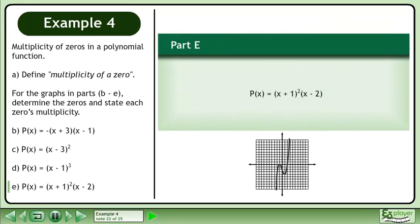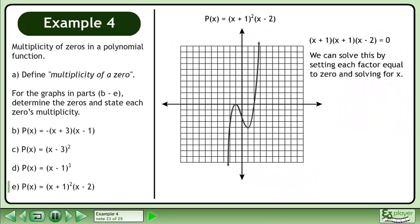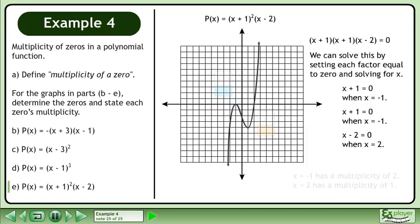In part D, we have the graph of p(x) = (x + 1) squared times (x - 2). (x + 1) squared times (x - 2) is the same as (x + 1) times (x + 1) times (x - 2). Setting each factor equal to 0: x + 1 = 0 when x = -1, x + 1 = 0 when x = -1, and x - 2 = 0 when x = 2. x = -1 has a multiplicity of 2, and x = 2 has a multiplicity of 1.